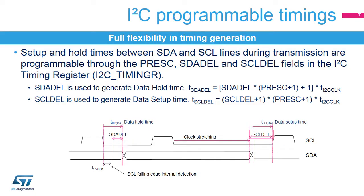The I2C setup and hold times can be configured by software through the I2C timing register. The SDA-DEL and SCL-DEL counters are used during transmission to guarantee the minimum data hold and data setup times. The I2C peripheral waits for the programmed data hold time after detecting a falling edge on the clock line before sending the data. After the data is sent, the clock line is stretched low during the programmed data setup time. The total data hold time is greater than the programmed SDA-DEL counter.